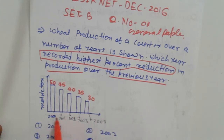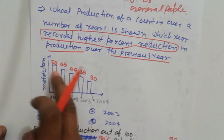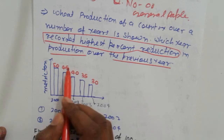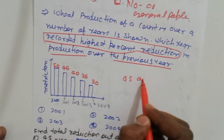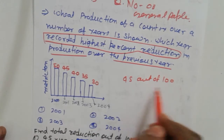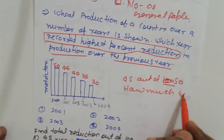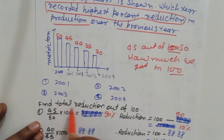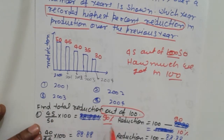The years are 2001, 2002, 2003, and 2004. We apply percentage reduction rules: 45 out of 50 into 100 gives 90 percent. So the reduction is 100 minus 90, which is 10 percent.